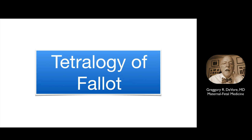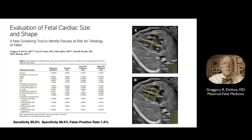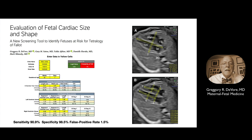Let's examine how speckle tracking analysis helps increase detection of tetralogy of Fallot. The study was entitled Evaluation of Fetal Cardiac Size and Shape: A New Screening Tool to Identify Fetuses at Risk for Tetralogy of Fallot. We identified size measurements able to separate fetuses with tetralogy from normal fetuses, including size and shape of the four-chamber view and the ventricles. This resulted in a sensitivity of 90.9%, specificity of 98.5%, and a false positive rate of 1.5%. The study also provided a calculator in which users can enter values for the length and diameters of the four-chamber view and ventricles to compute the probability of tetralogy of Fallot.